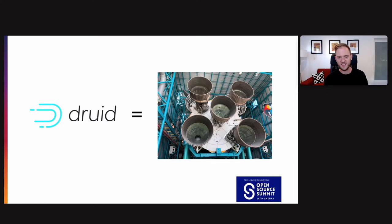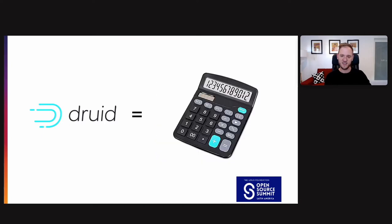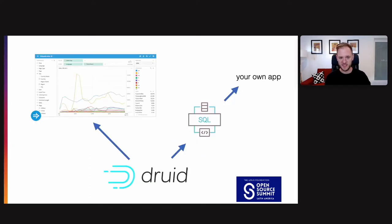We like to think of Druid as an engine, a rocket ship. It's a database. It goes really fast. What Druid really is, is it's a big calculator. It's a big fancy calculator, scales to thousands of servers, does analytical queries really, really quickly. Druid's purpose, what it was originally created for, was to power analytical applications.